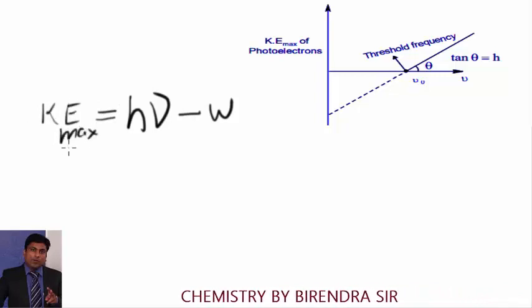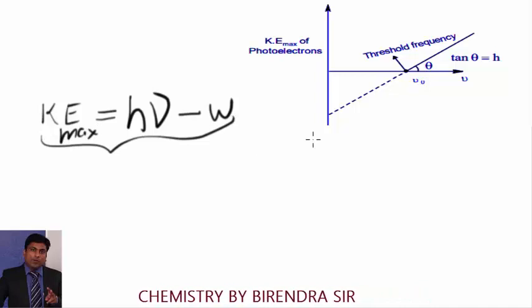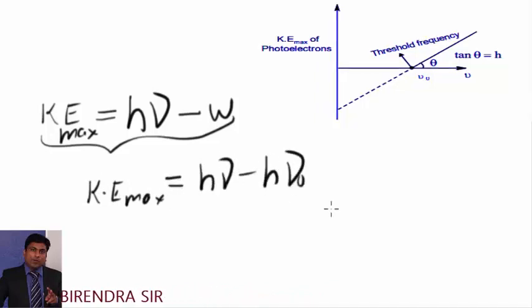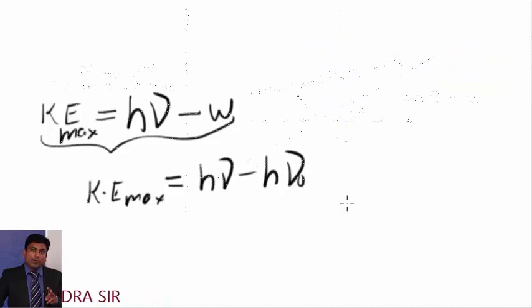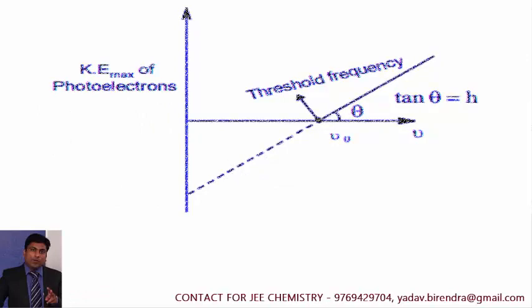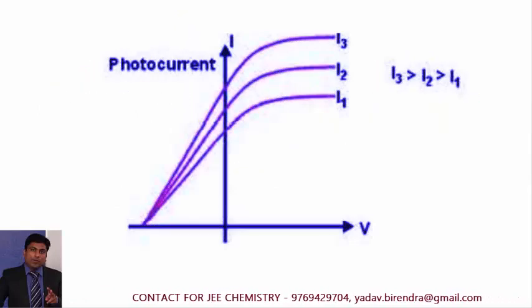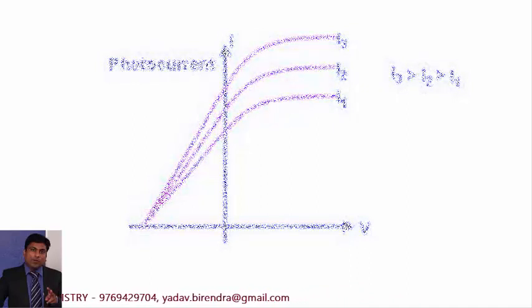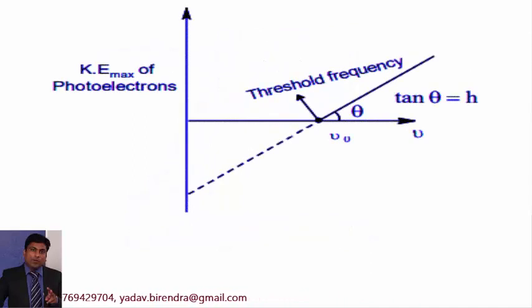Please note this is the maximum possible kinetic energy. You can also write kinetic energy max in form of h nu minus h nu 0. Nu 0 is threshold frequency. As I told you, if you complete the circuit, then there will be a photoelectric current and this current increases with the increase in the intensity of light. More number of photons means more number of photoelectrons. But increase in kinetic energy of electron is possible only by the increase in the frequency of incident light.